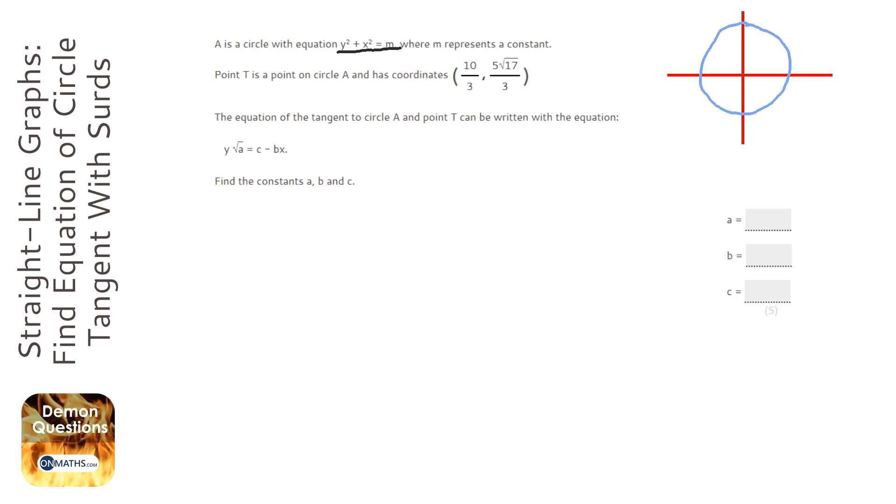So we know that, first of all, having a look at this question, we've got a point T, which I'm going to put here. So point T, and it's on the circle. Now, we're looking for the equation of the tangent. So if I draw the tangent on, probably not going to be as good as my circle. We're looking for this equation here. But, something that will help us is to understand that a tangent and a radius hit each other at 90 degrees. So if I draw on the radius, which we know starts at the centre, we know that that bit there is going to be 90 degrees.